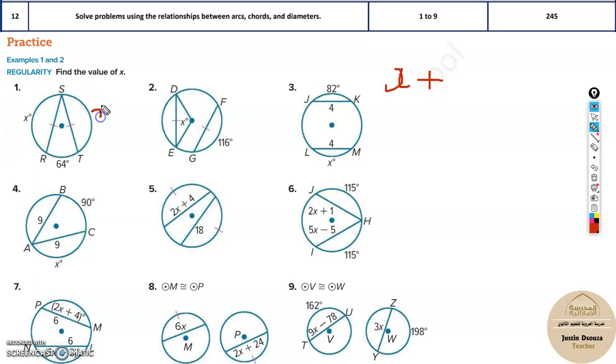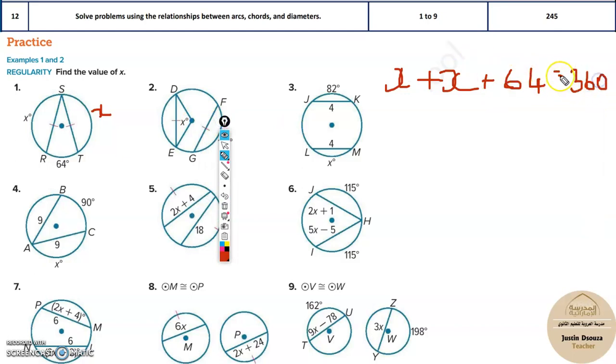It's x plus this, which is also x, because if this is x, this is also x, right? So again, x plus 64. Now this total is equal to what? The total is equal to 360 degrees. So the only thing is this concept.